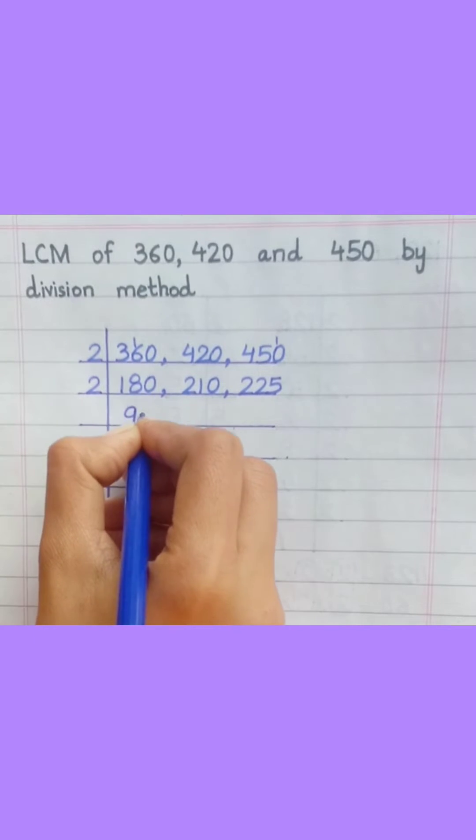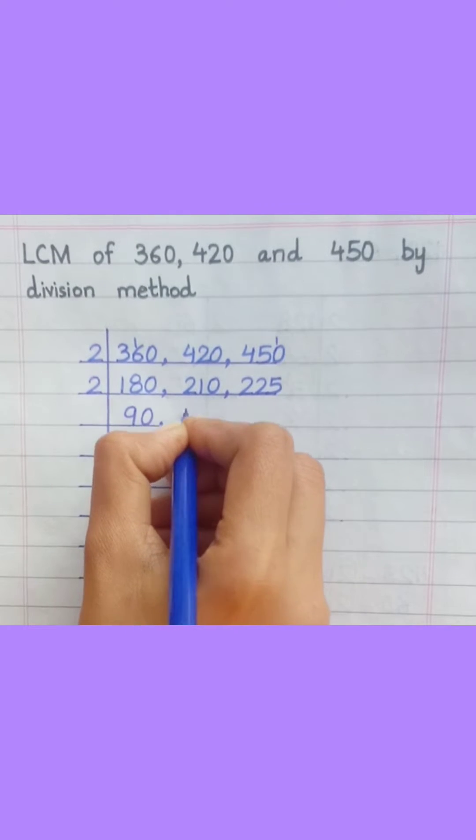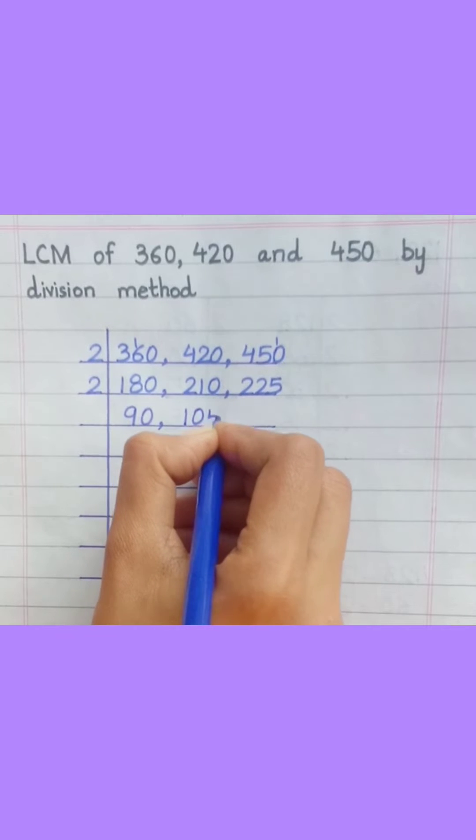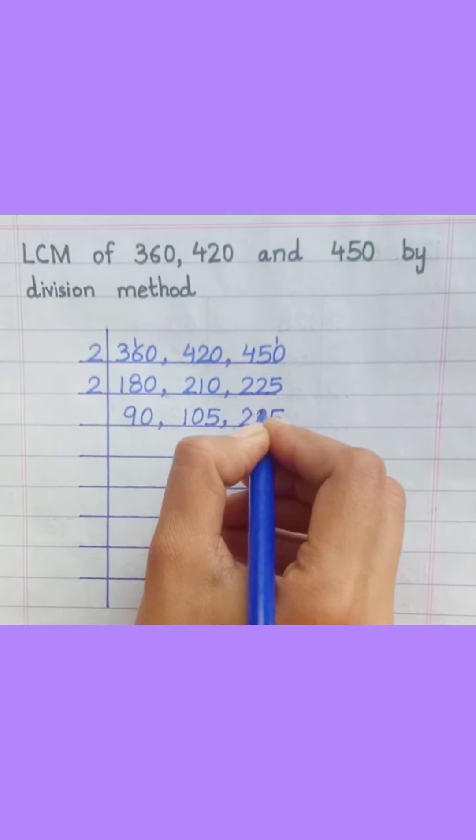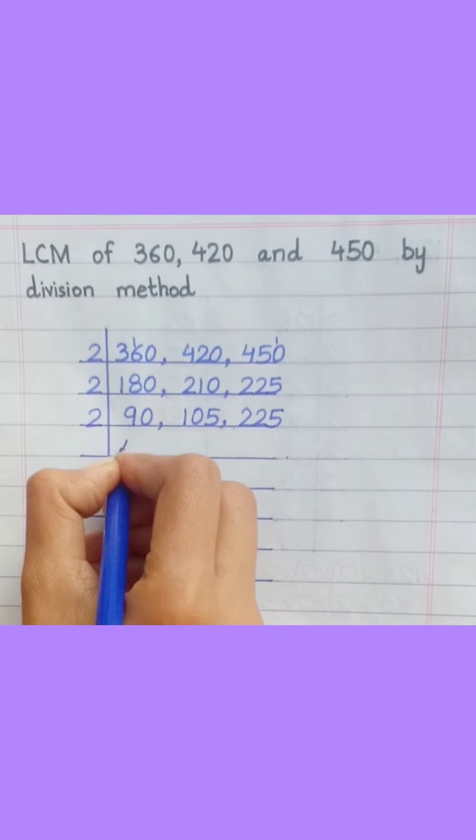2 nines are 18, 2 zeros are 0, 2 ones are 2, 2 zeros are 0, 2 fives are 10. 2 fours are 8, 2 fives are 10.